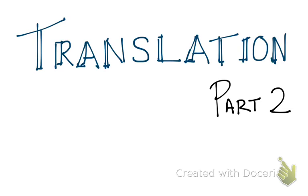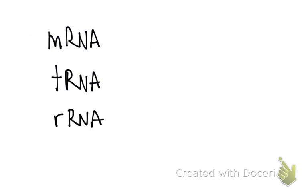Welcome to the second part of our translation video. In this video, we are going to talk about physically how the mRNA, tRNA, and rRNA work together to make a polypeptide. Let's review very briefly what these three forms of RNA are.